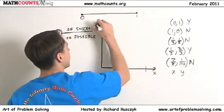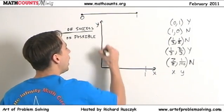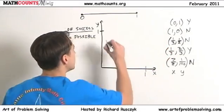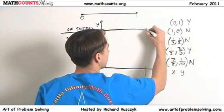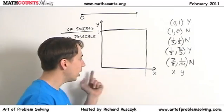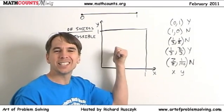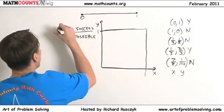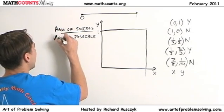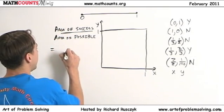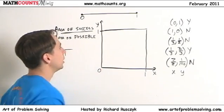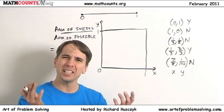I'll call the first number x and the second number y. I know that x has to be from 0 to 1 and y has to be from 0 to 1. So any pair I pick, viewed as coordinates, must be inside this unit square — side length 1, because both coordinates range from 0 to 1. This is easy to measure: its area is 1. So I'll find the area of the successful region and divide by the area of the possible region, which is just 1.